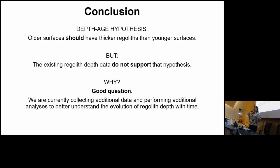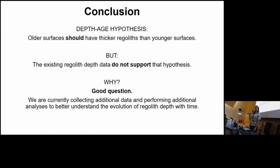In conclusion, theoretically, given our understanding of how regolith forms, older surfaces should have thicker regoliths than younger surfaces, but it's not clear the existing data support that hypothesis. We are continuing to collect new data. My graduate student Elizabeth Atang is taking new data, and we hope to have another paper this fall to better understand why the existing data may not be clearly showing a trend of increasing depth with age.